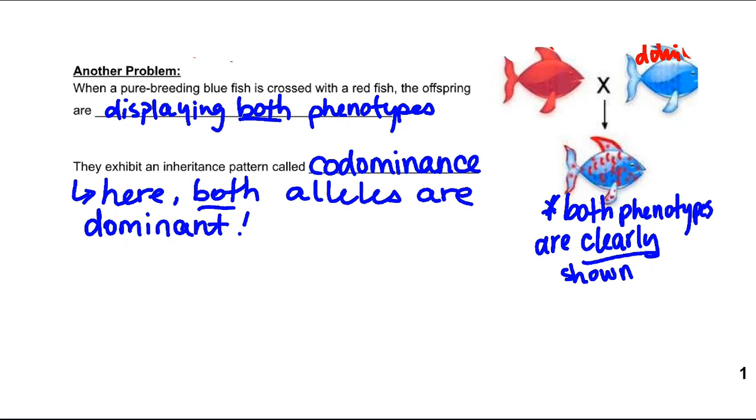This is what's called co-dominance. We have both alleles being dominant and both alleles lead to a phenotype being shown that displays both aspects of the parental.